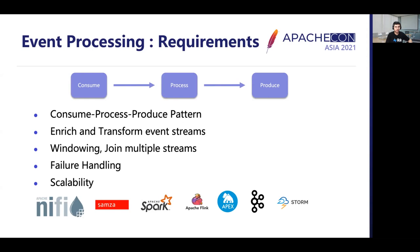Event processors read messages from a source, perform some transformation on those events, and finally write the transformed events to a destination. Transformations can be as simple as doing lookups — for example replacing IDs with actual values — or complex aggregations involving time-based windowing or joining multiple data streams. Failure handling is important to guarantee message delivery semantics such as at-least-once or exactly-once. Scalability is also key. There are many solutions that support event processing, such as Apache NiFi, Apache Samza, Apache Spark, Flink, Apex, Kafka Streams, and Apache Storm.